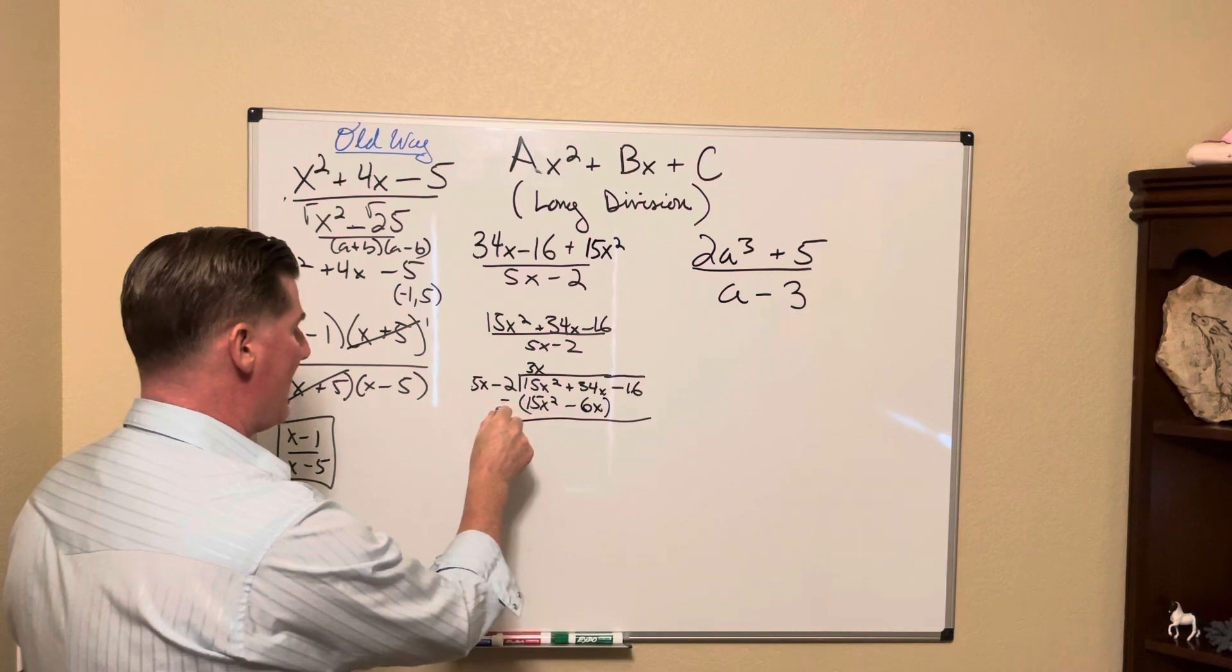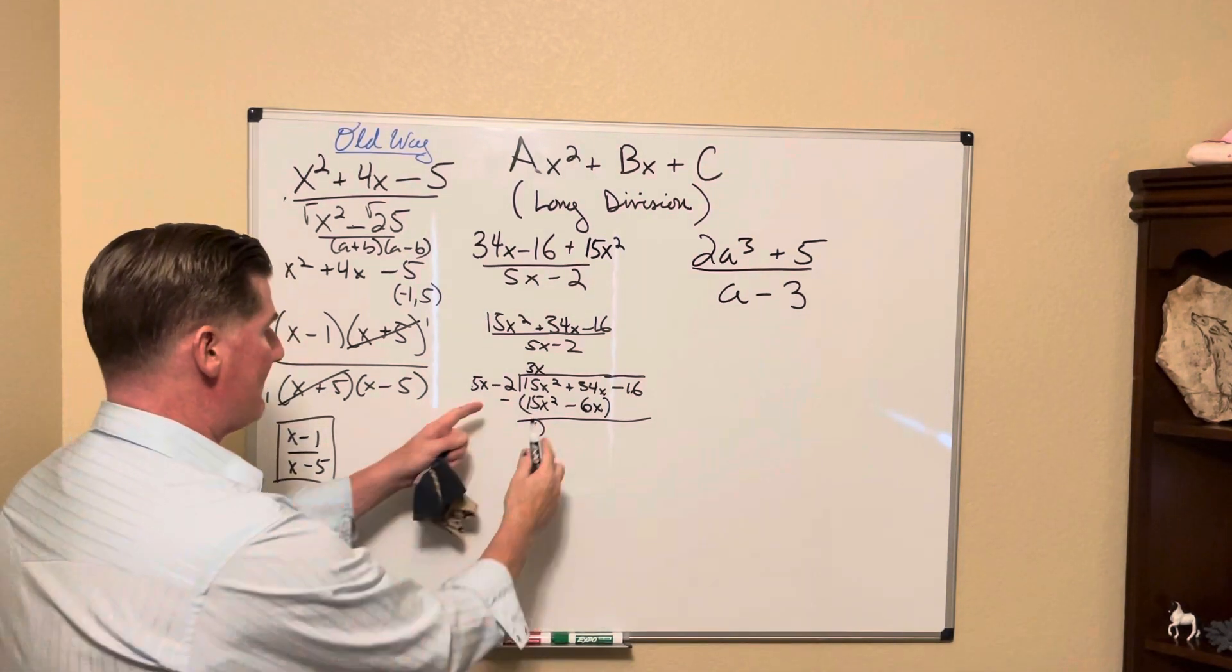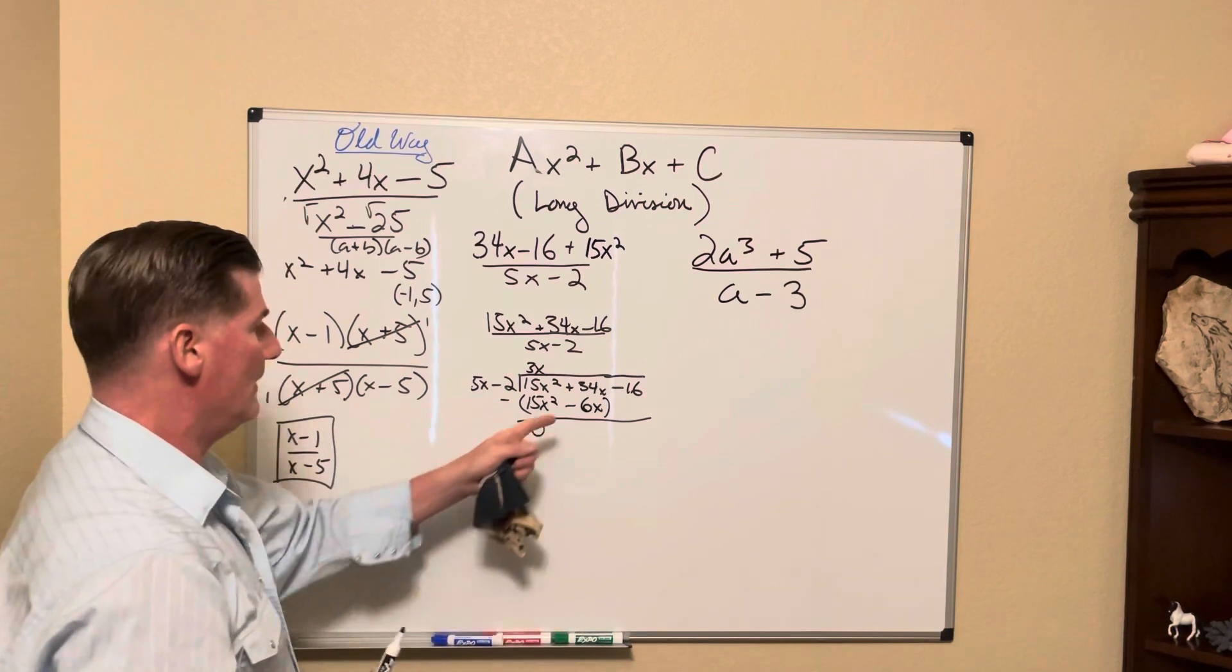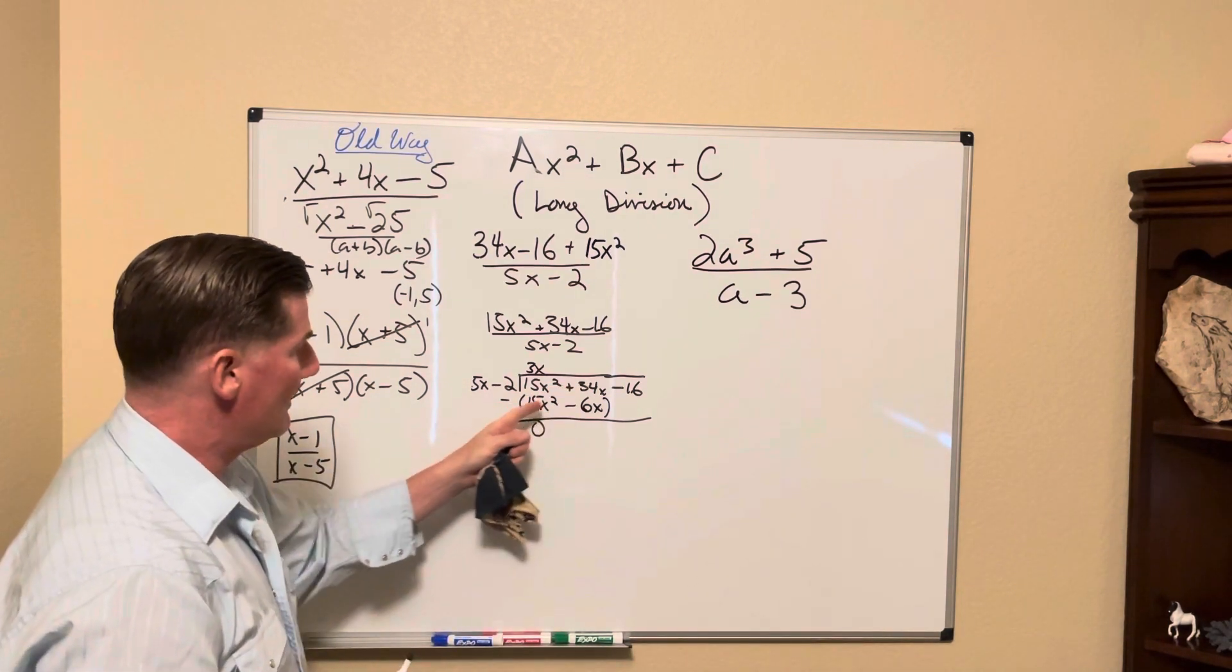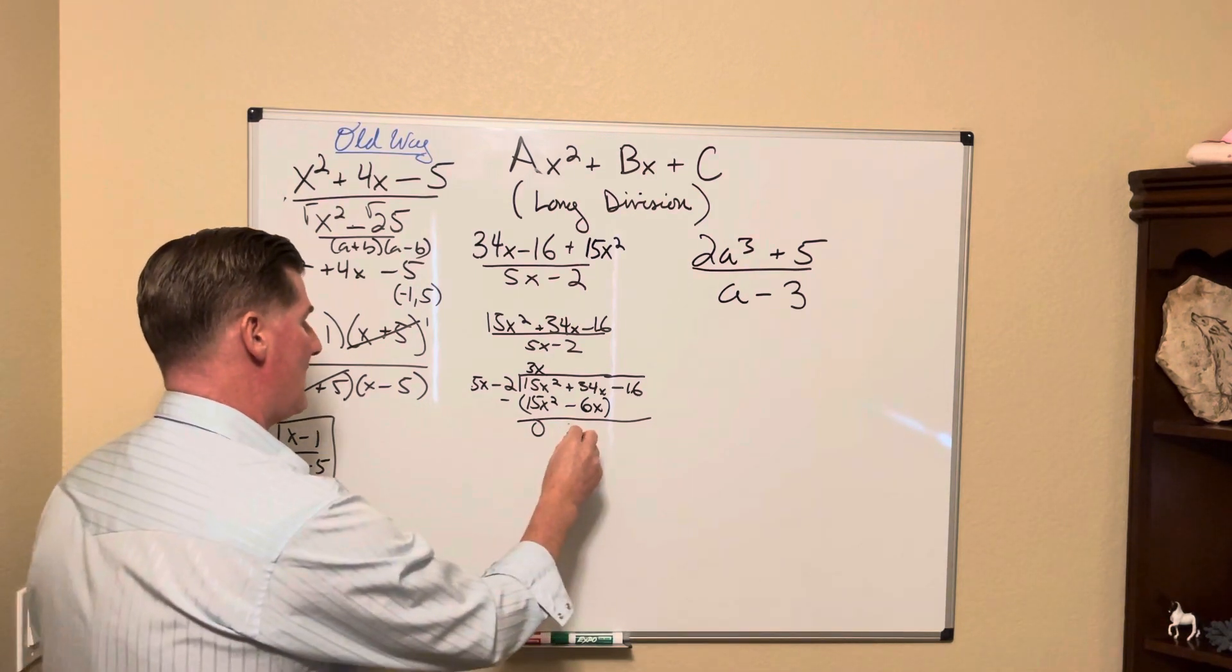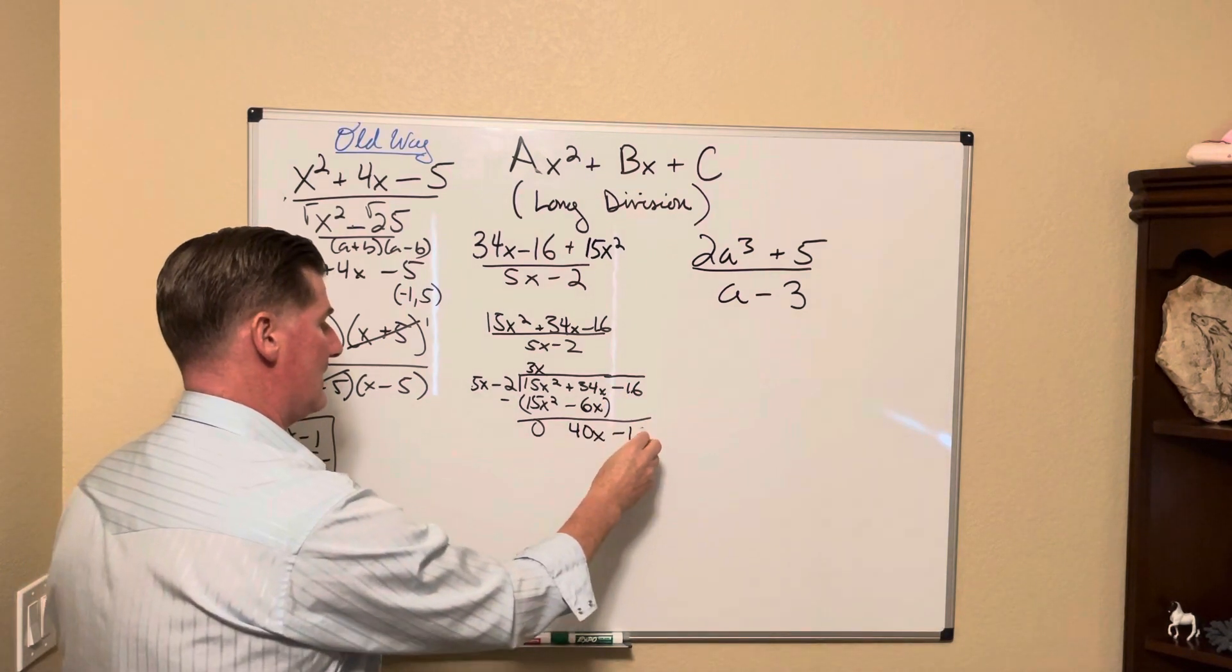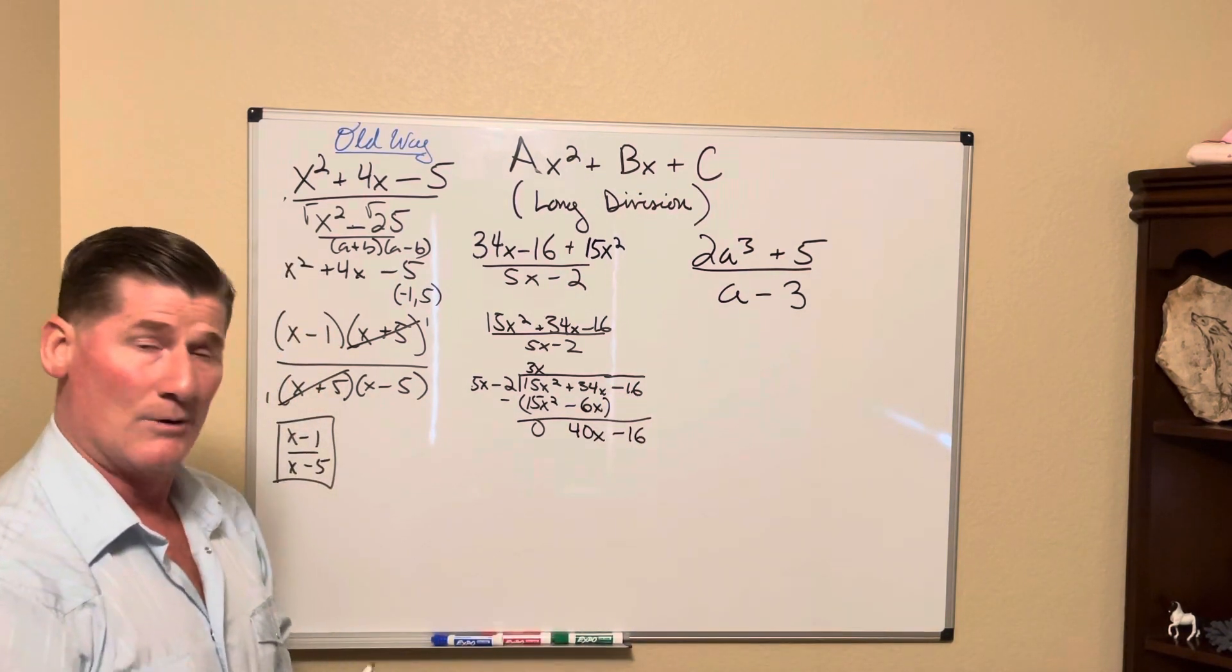Let me walk through it. 15x squared minus 15x squared gives us a zero. That's what we wanted to do. But I've got a negative here and a negative here. So 34x plus 6x, because two negatives make it positive, gives me a 40x. Let me bring the negative 16 right here.